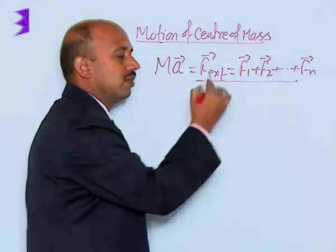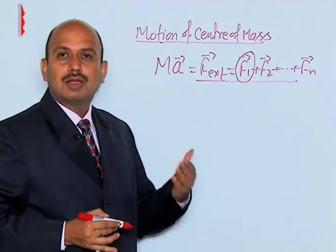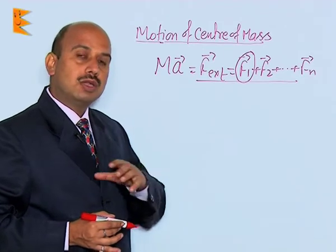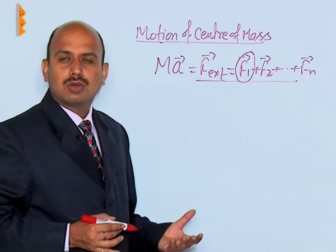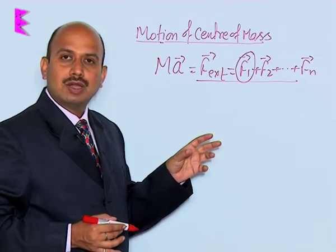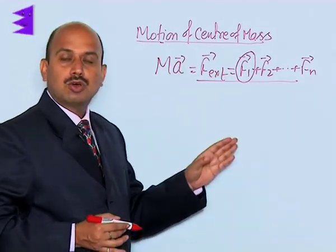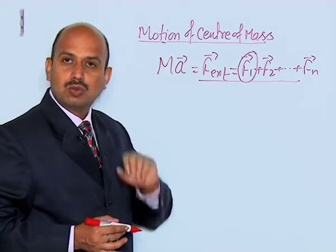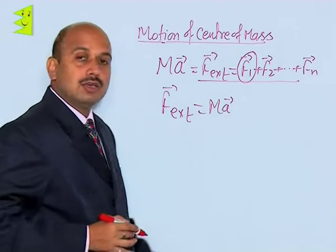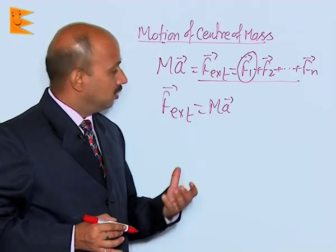So F_external can be written like this. Take care: there are also internal forces, but internal forces do not contribute to the motion of the center of mass because they cancel out — the first particle applies a force on the second one and the second applies on the first one, so all internal forces cancel out. Therefore, F1 and F2 are considered as external forces on their respective particles, and for the center of mass we write F_external = M·A. The center of mass is a point where the entire mass of the body is assumed to be concentrated.